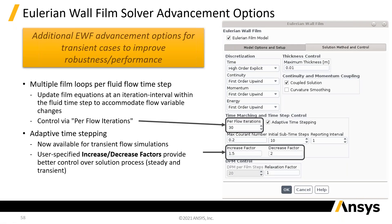For the ordinary wall film, you now have more control over the time marching — you can do more steps per particle iteration and control the time step behavior. This gives more flexibility in the wall film solver.